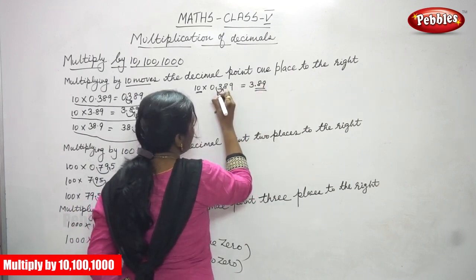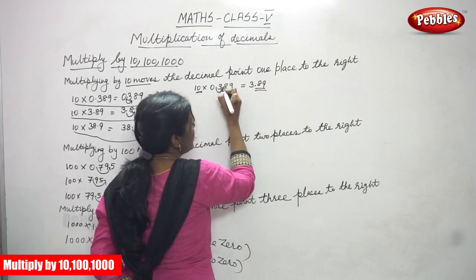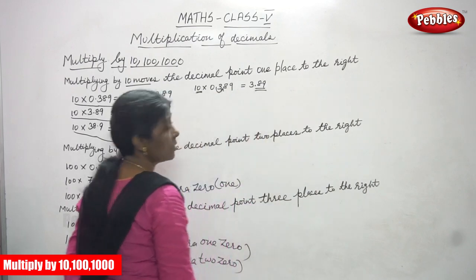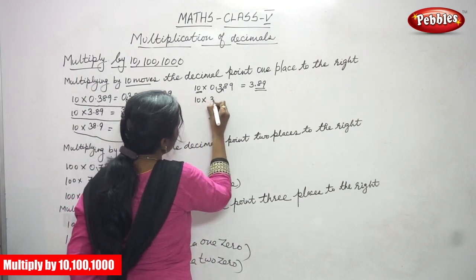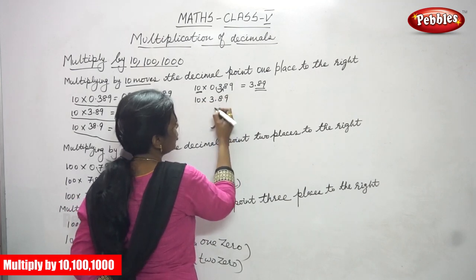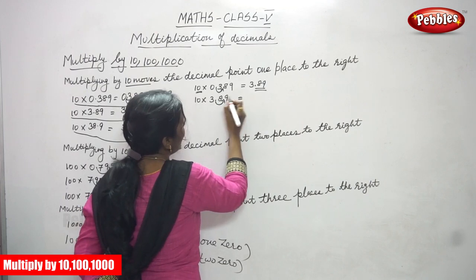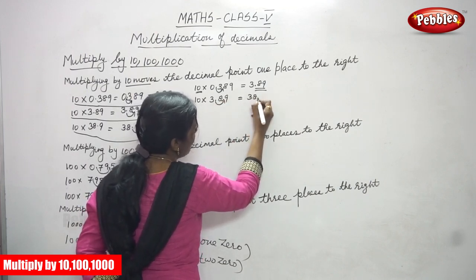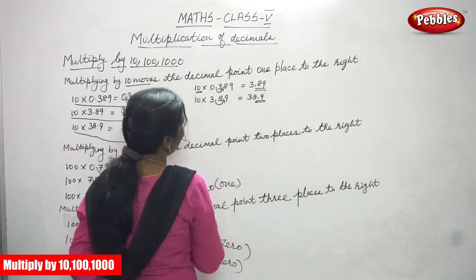This point moves to the right side — after the 3, the answer is 3.89. The next one is 10 into 3.89. Again, what are you going to do? This decimal point moves to the right direction. Where will the point come? After 38, you must put a point, then write 9. The answer is 38.9.